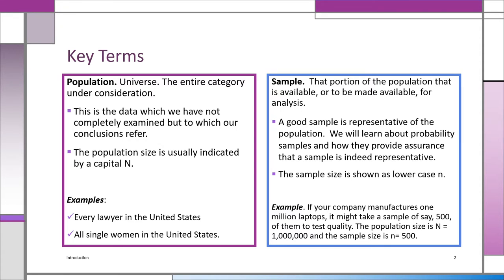For example, let's say a company manufactures a million laptops. They don't want to test a million laptops — it'll cost a fortune. So what they'll probably do is take a representative sample of, say, 500 laptops. The population size — capital N — is a million. The sample, lowercase n, is 500. So we test the 500. That's usually what we do in something called quality control.